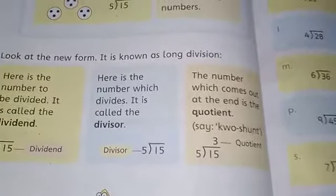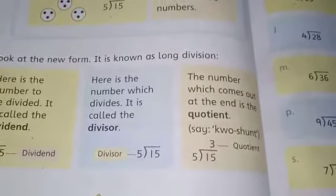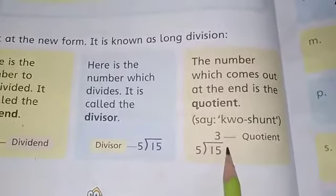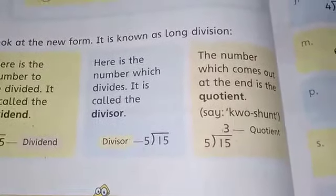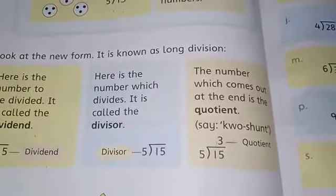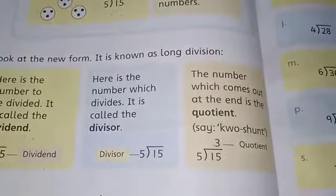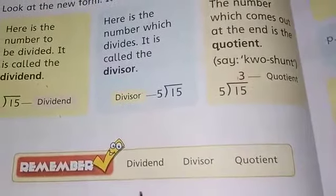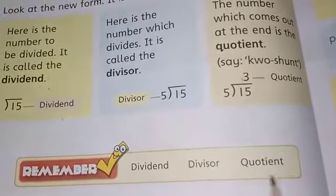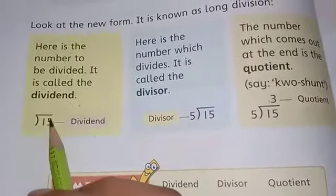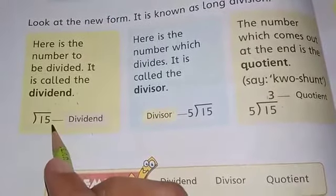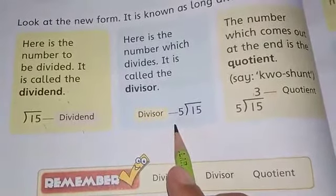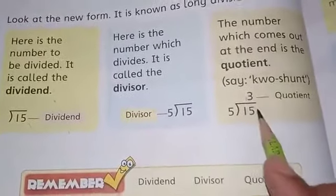Dividend—your number is 15. Divisor—your number is 5. And quotient—that is your number 3. This is the new way to solve any division question. Remember: dividend, divisor, quotient. Dividend is the number to be divided. Divisor is the number with which you divide. Quotient is the number that comes at the end, which we count as the answer.